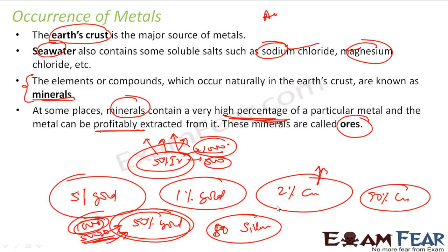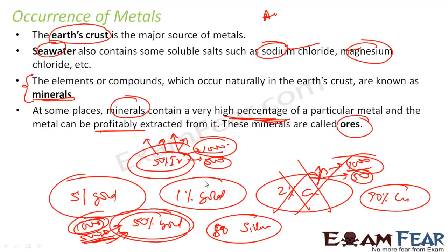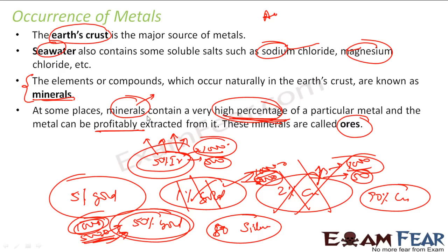For that, the mineral should have a high percentage of that metal. For example, copper at 2% doesn't make sense — you spend 1,000 rupees and find copper worth only 50 rupees. Similarly, 1% gold is not feasible now, but maybe after 50 or 100 years when the gold price is higher or extraction processes improve, it may become an ore. So ores are minerals with a typically high percentage of a particular metal from which you can profitably extract that metal.